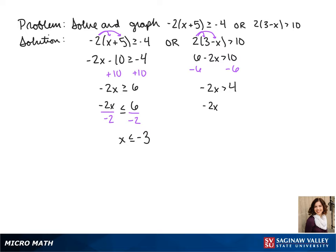Again, when we divide by a negative we have to flip the sign. So negative 2x divided by negative 2 is less than 4 divided by negative 2. So our answer is x is less than or equal to negative 3 or x is less than negative 2.